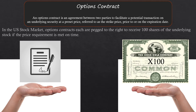An options contract is an agreement between two parties to facilitate a potential transaction on an underlying security or asset at a preset price, referred to as the strike price, prior to or on the expiration date. In the US stock market, options contracts are pegged to the right to receive 100 shares of the underlying stock if the price requirement is met on time.